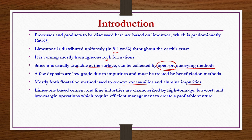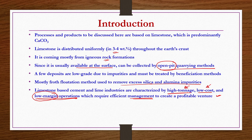The characteristics of cement and lime industries, which are based on limestone, are that they are high-turnage, low-cost and low-margin operations. You are able to produce in high turnages even at low cost, but unfortunately the margin is also low. Because of such reasons, you need efficient management to create a profitable venture if you want to get into the cement or lime industries.